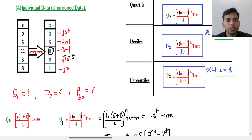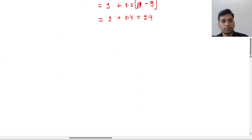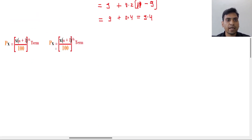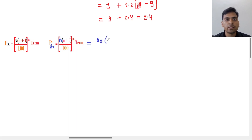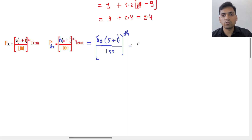Now our focus is on P80, the 80th percentile. The formula for percentile is P_x = x(n+1)/100 th term. Our target is the 80th percentile, so we replace x by 80. The calculation is 80 × (5 + 1) / 100 = 80 × 6 / 100 = 480 / 100 = 4.8. So the result is the 4.8th term.